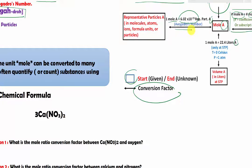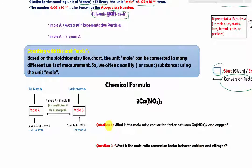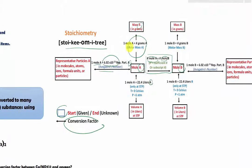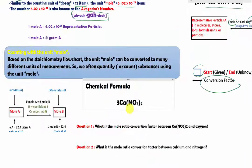From the stoichiometry flowchart, we can relate mole to almost anything — grams, representative particles, and liters. Today we focus on mole of A to mole of B, relating two different chemicals. The unit mole is the central or universal unit that allows us to convert into many different unit measurements such as grams, liters, and atoms or other representative particles. It makes sense that when we quantify substances in chemistry, we use the unit mole.